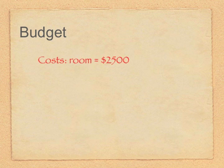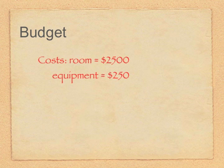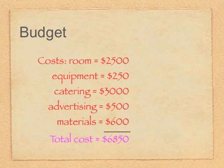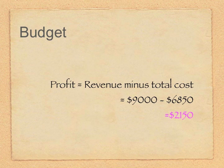Let's write up the budget. The total cost of the rooms is $2,500, with an extra $250 for the audio-visual equipment. Catering for the 30 people is $3,000 for the five days. Advertising is $500 and the materials will cost $600. So the total cost comes to $6,850. In terms of revenue, 30 people at $300 per person is $9,000. After subtracting the $6,850 it costs, it looks like the project will make $2,150.